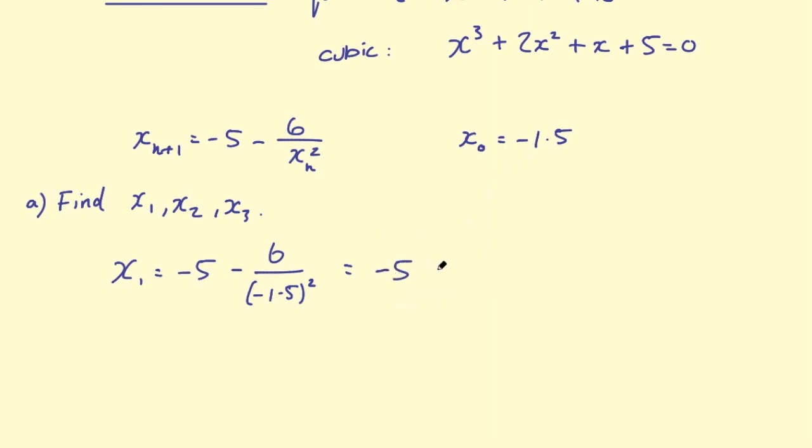We've got -5 - 6 over 1.5 squared, and that minus cancels out because when we multiply two negatives we make a positive. So this is 6 over 2.25, that's 1.5 squared. -5 - 6 divided by 2.5 gives 2.6 recurring. Then -5 - 2.6 recurring is -7.6 recurring. That is my first term in this iteration.